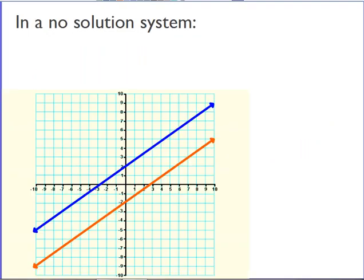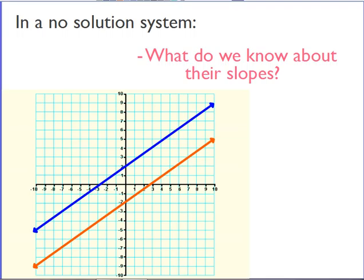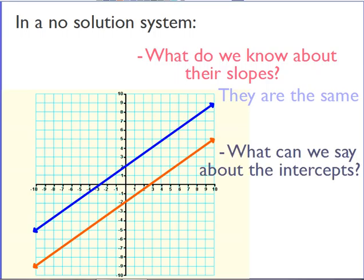In a no-solution system, what do we know about their slopes? Well, the slopes are always going to be the same because the lines are going to be parallel. What can we say about the intercepts of these two parallel lines? They're always going to be different. So the slopes are the same, the y-intercepts are different in a no-solution system.